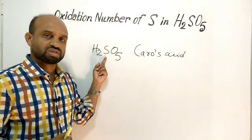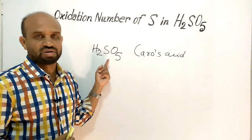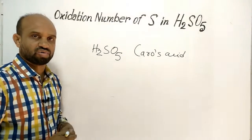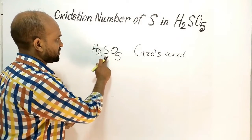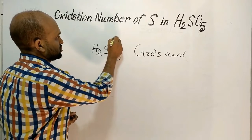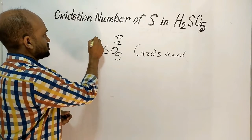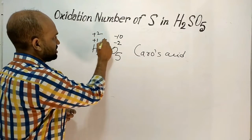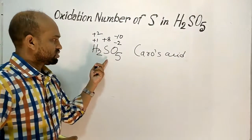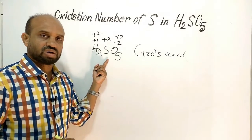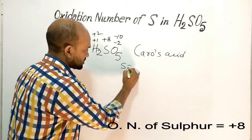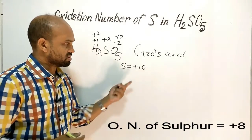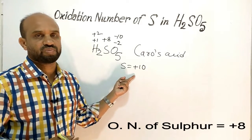Now let's find the oxidation number of sulfur in Caro's Acid. As per the general rule, the oxidation number of sulfur works out to be minus 2, minus 1, plus 1, plus 2 — we need another plus 8, giving plus 10. But the oxidation number of sulfur cannot be plus 10.